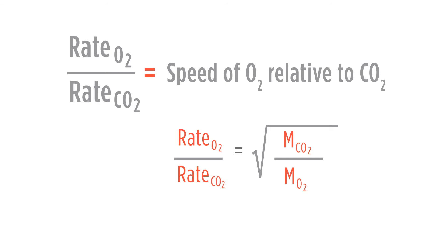Therefore we can use the rate of oxygen over the rate of CO2 equals the square root of the molar mass of CO2 over the square root of the molar mass of oxygen. We just need to look up the molar masses for carbon dioxide and oxygen, plug that into the formula.